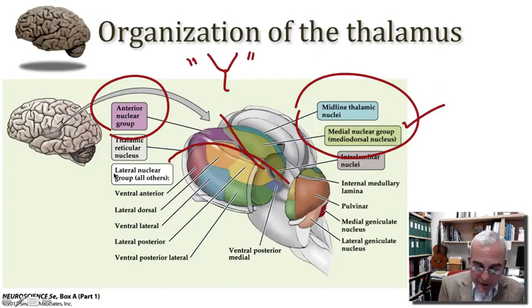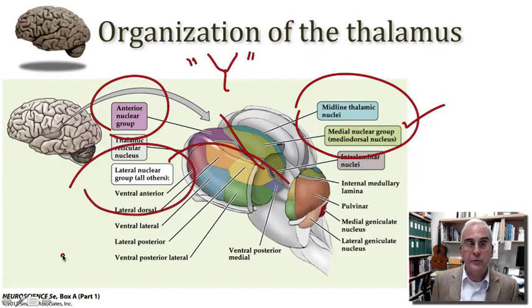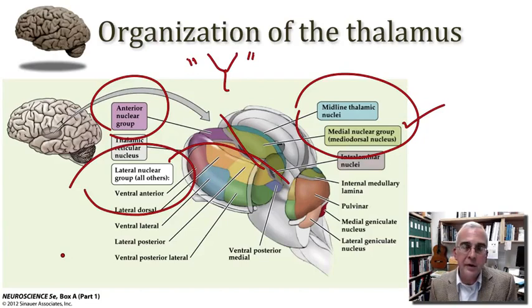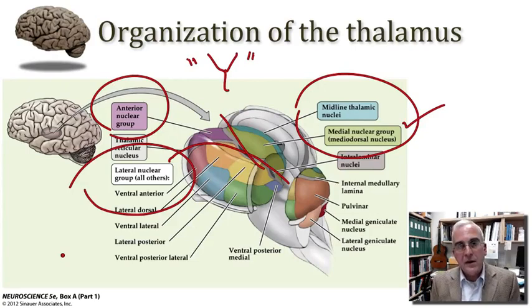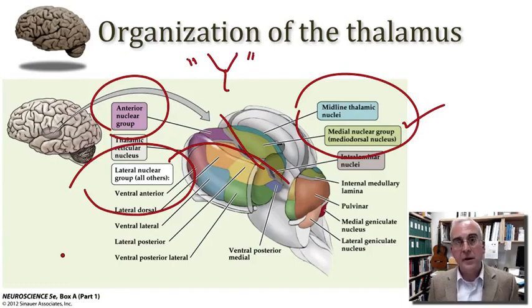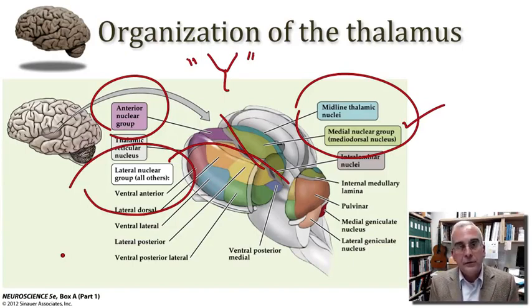On the lateral aspect of the thalamus, we find most other cell groups that will be of interest to us in this course. These include a variety of nuclei that project to the somatic sensory regions of the parietal cortex, the visual regions of the occipital cortex, the auditory structures in the temporal cortex, and even the motor structures in the posterior part of the frontal lobe. It's in this lateral group that we find many of our sensory pathways relaying information to the cerebral cortex in an area-specific pattern.